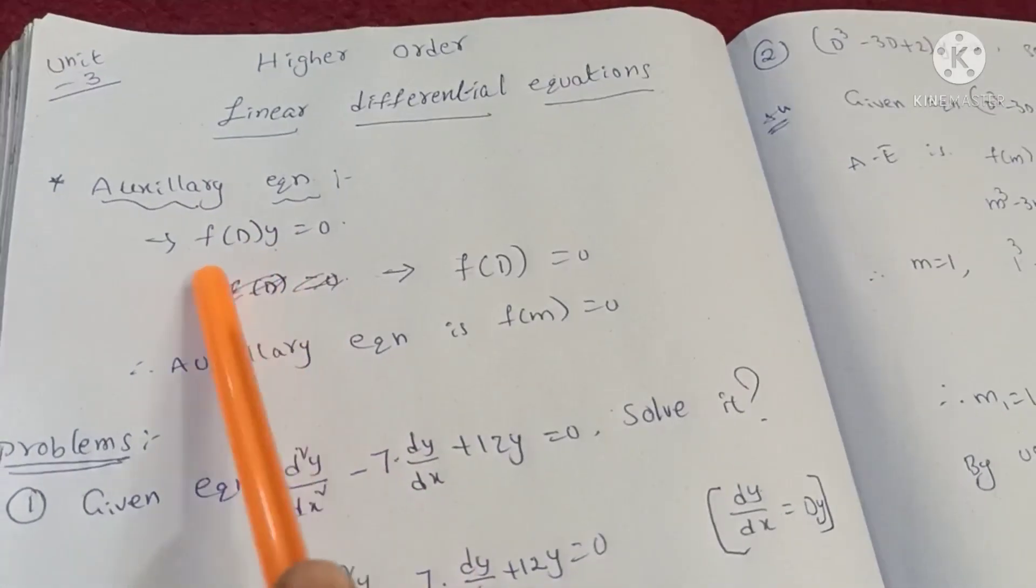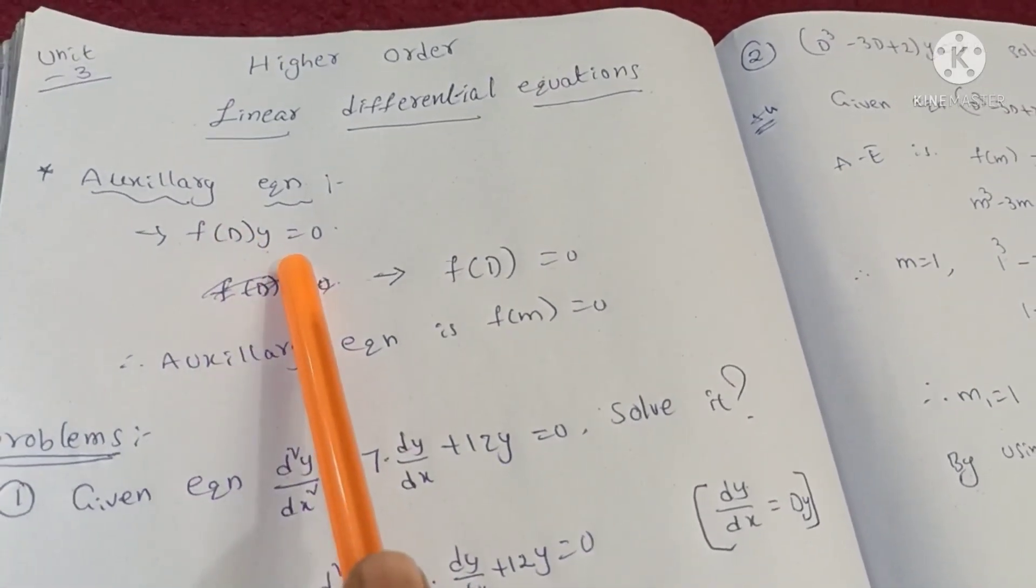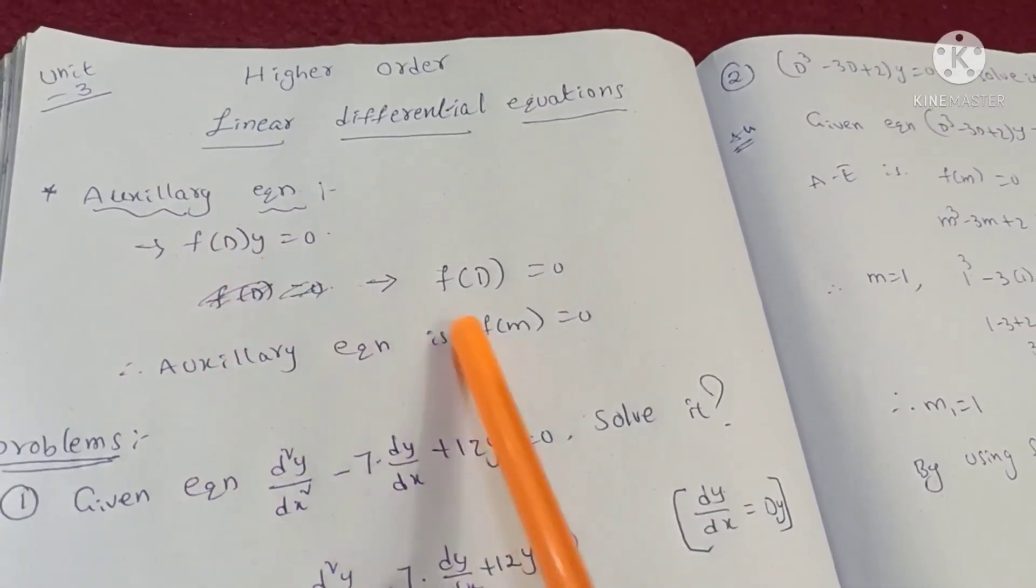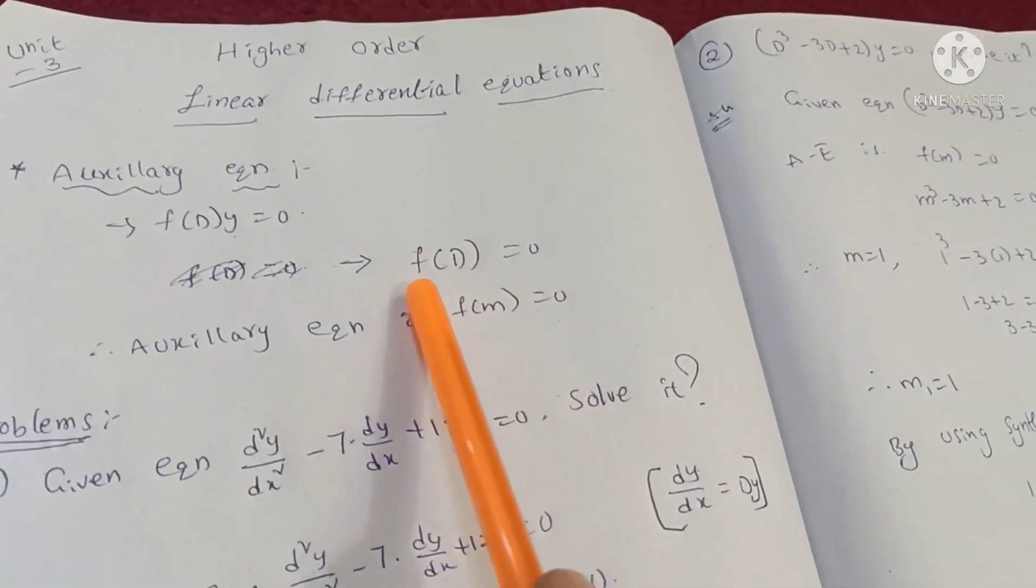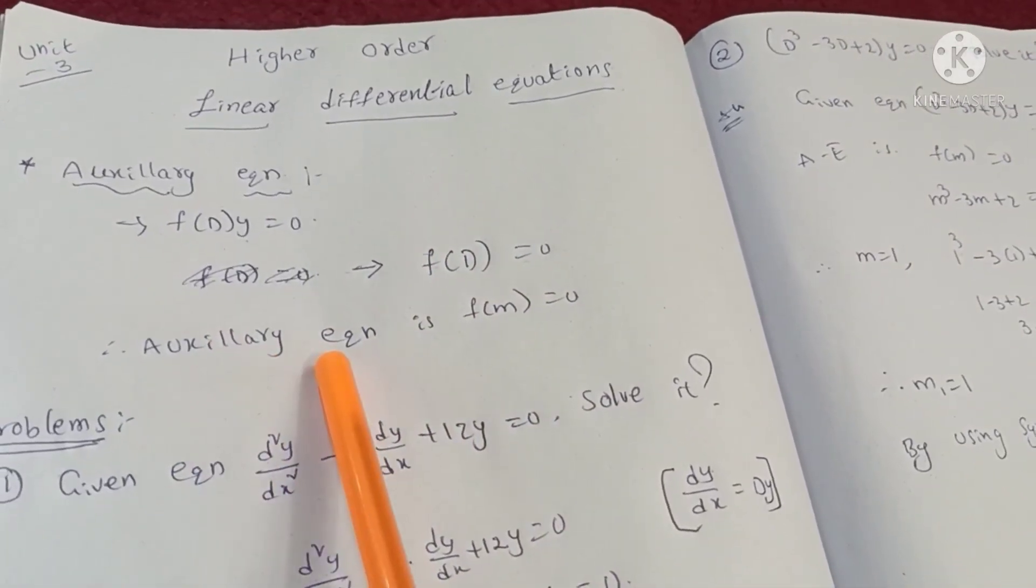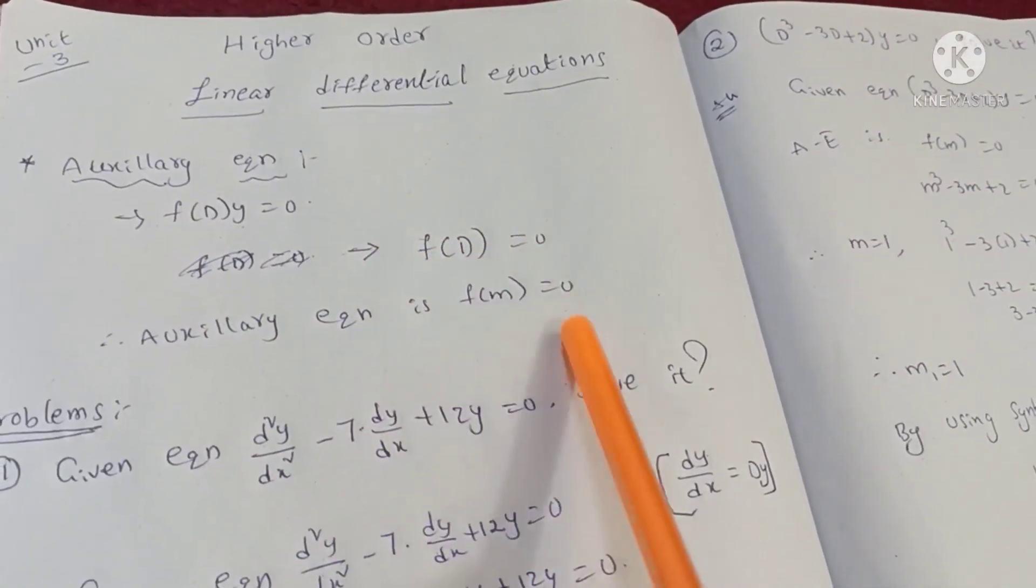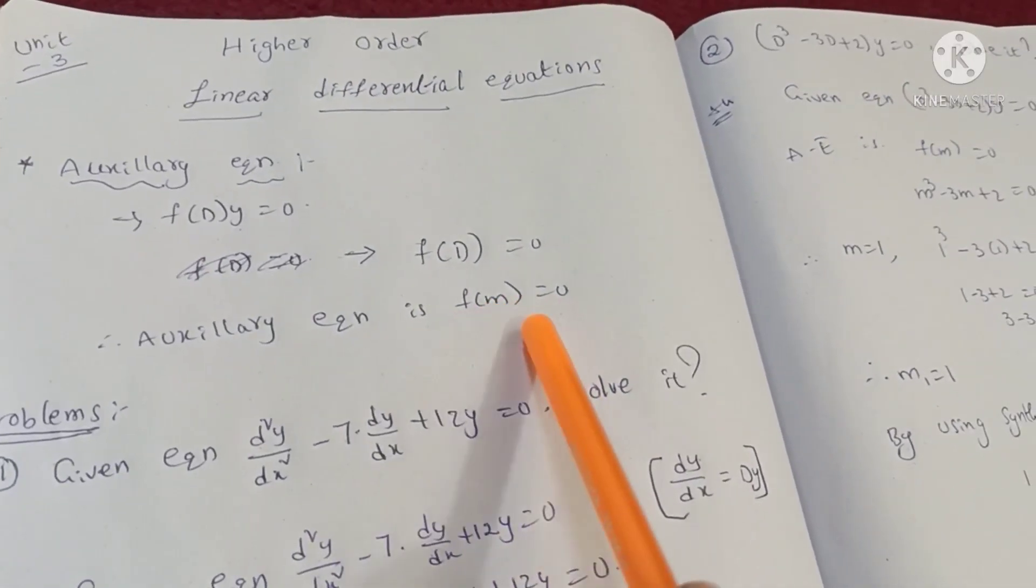The first equation is f(D)y. This is the y. f(D) equals 0. This is the auxiliary equation. f(D) equals 0.